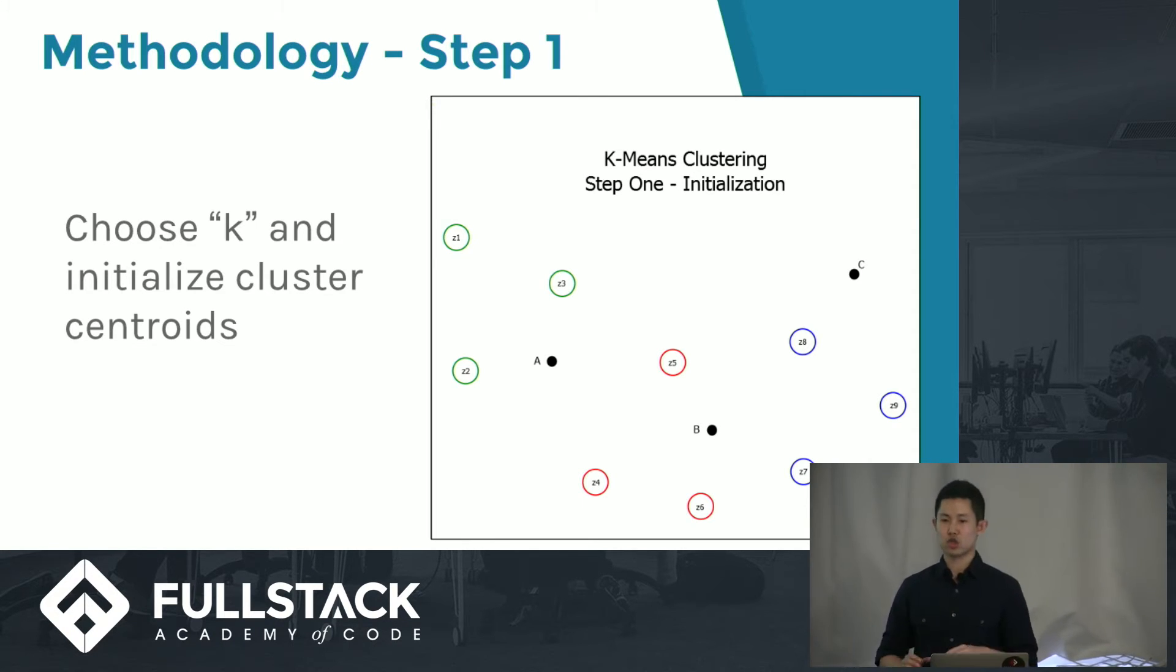From there, you choose the number of clusters you want to implement, K number of clusters, which in here you can see is three: A, B, and C. Then you initialize the clusters by picking random points as the centroids of those clusters. A, B, and C we're picking at random and they are the centroids.